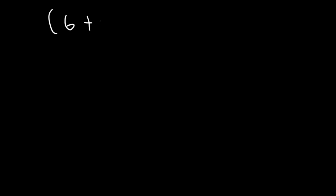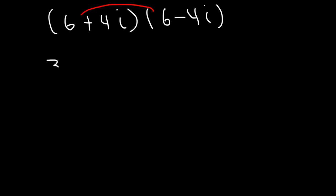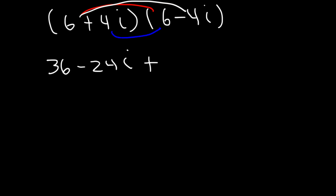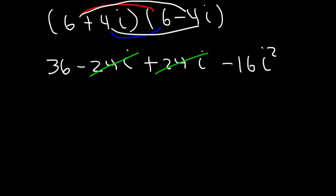What is (6 plus 4i) multiplied by (6 minus 4i)? These two are conjugates of each other. Whenever you multiply a complex number by its conjugate, the middle terms will cancel. 6 times 6 is 36. 6 times negative 4i is negative 24i. 4i times 6 is positive 24i. And 4i times negative 4i is negative 16i squared. Negative 24 plus 24 adds up to 0, and negative 16i squared is positive 16.